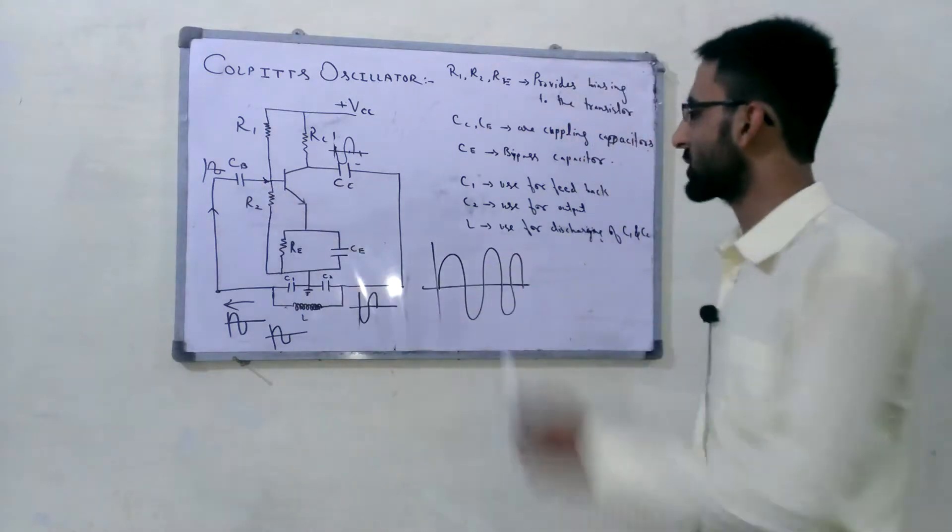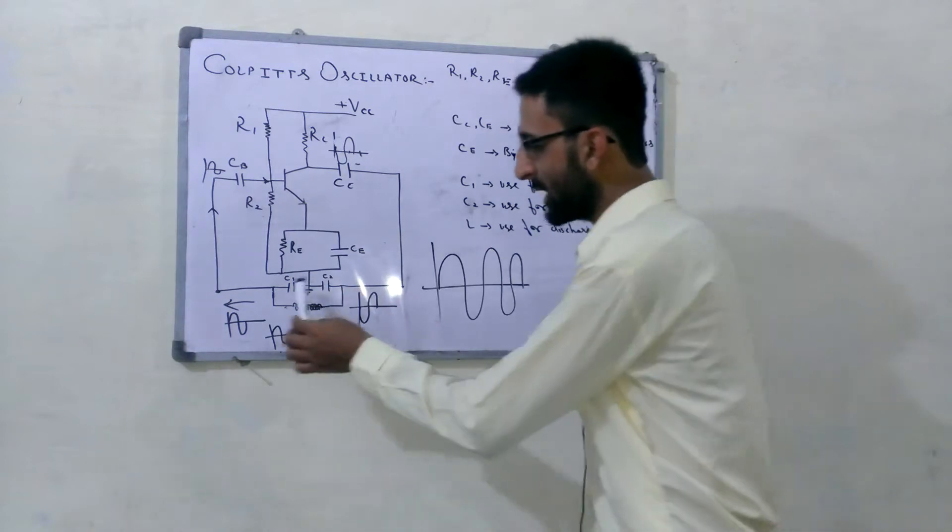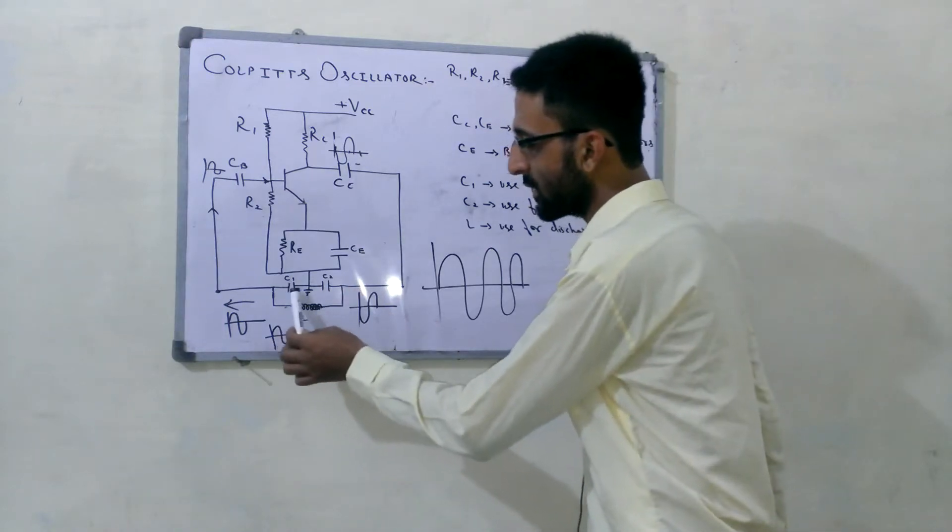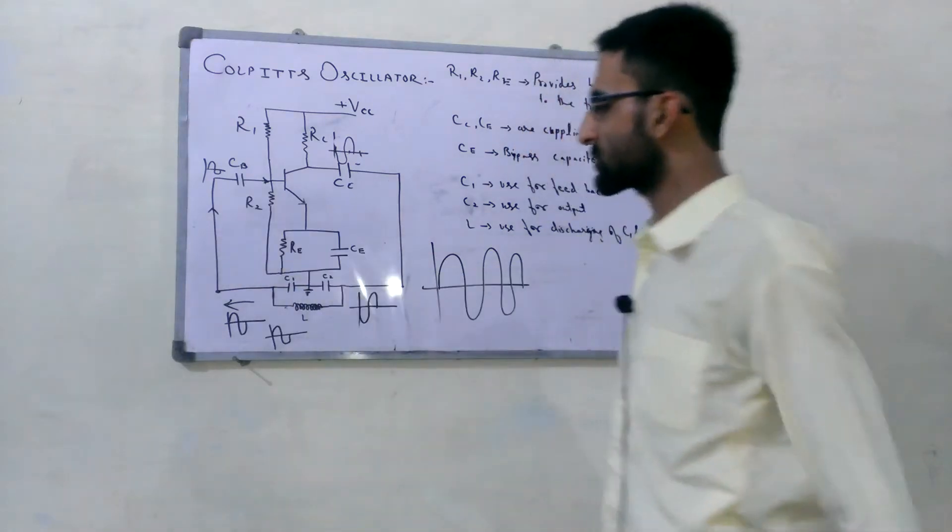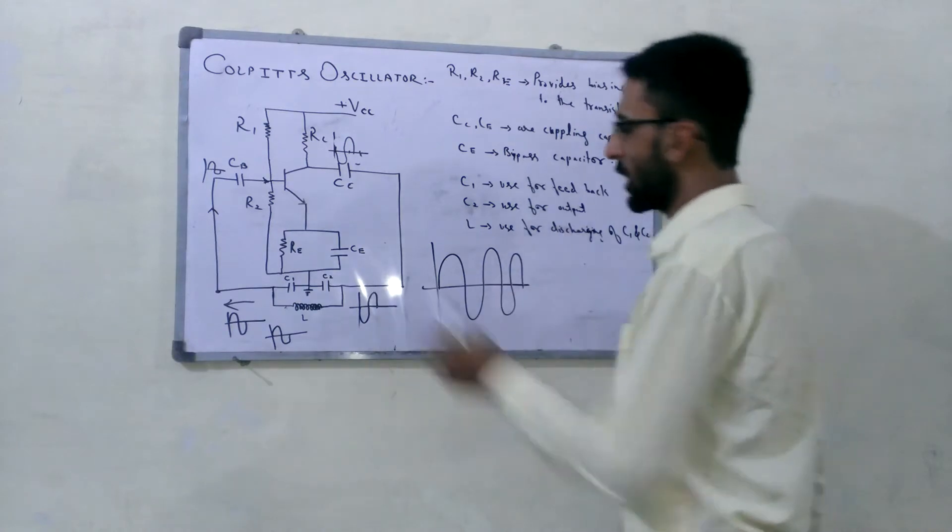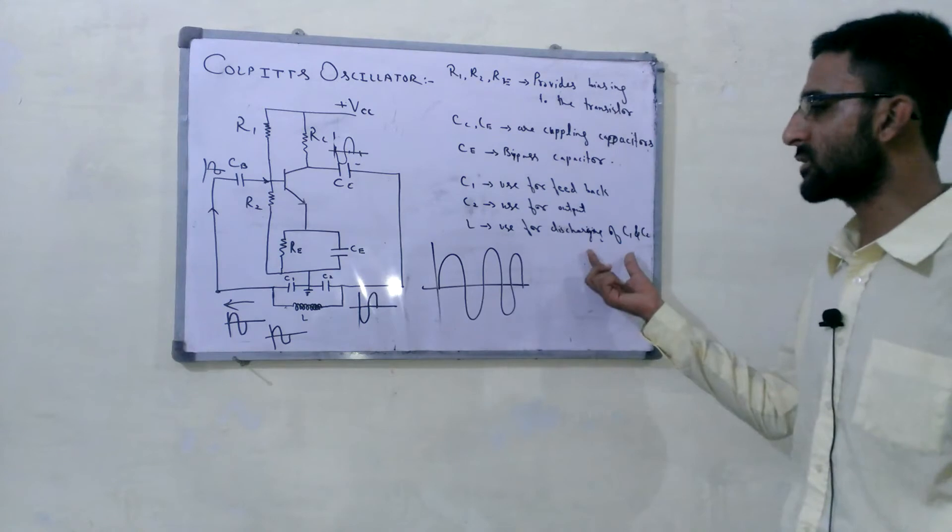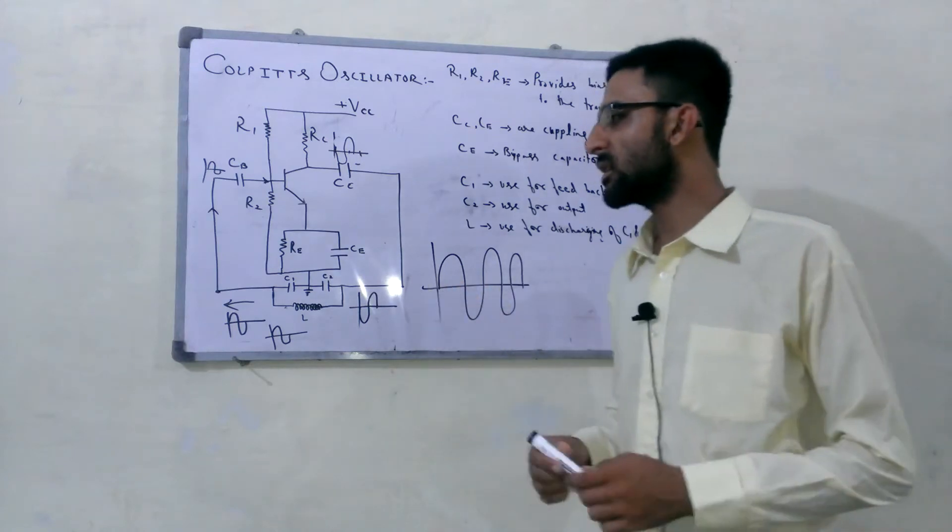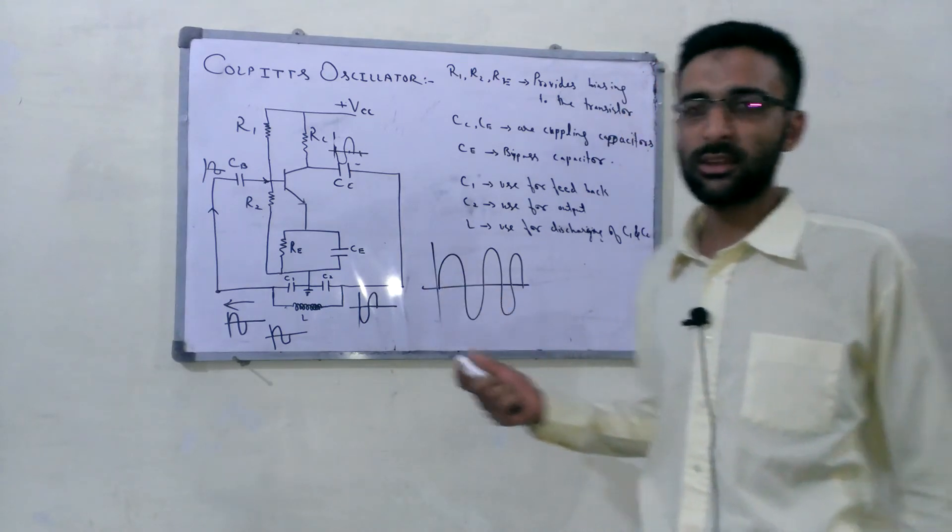C1 is used for feedback. C1 provides potential difference across it and provides feedback to this circuit. And C2 is used for output. L is used for discharging of C1 and C2. So this is the simplest explanation of Colpitts oscillator. Thank you.